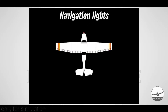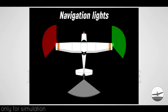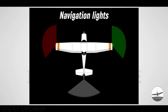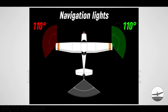Starting with navigation lights, also known as positioning lights. They are on the wingtips of the aircraft and on the tail. On the left we have the red light, on the right we have the green light, and on the tail you will find the white light. These lights have a certain angle of illumination where the lights on the wingtips have 110 degrees and the light on the tail has 140 degrees of illumination.